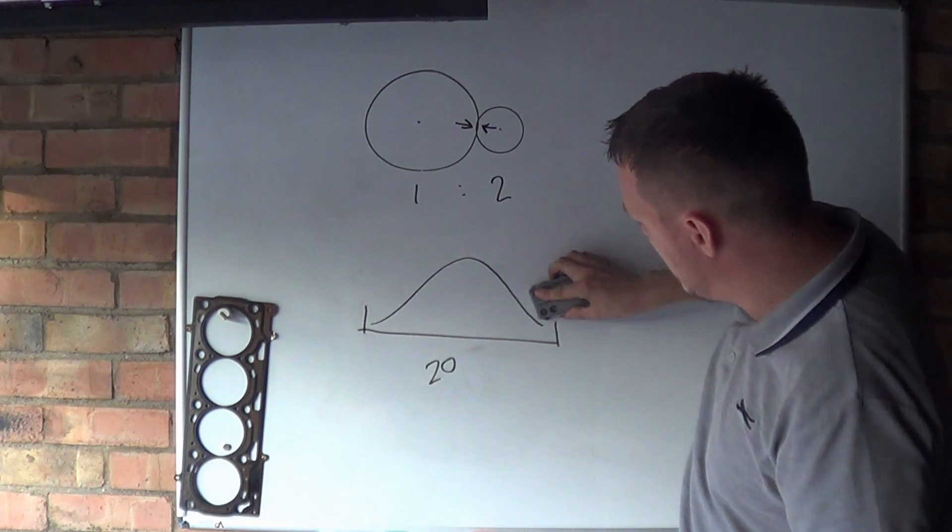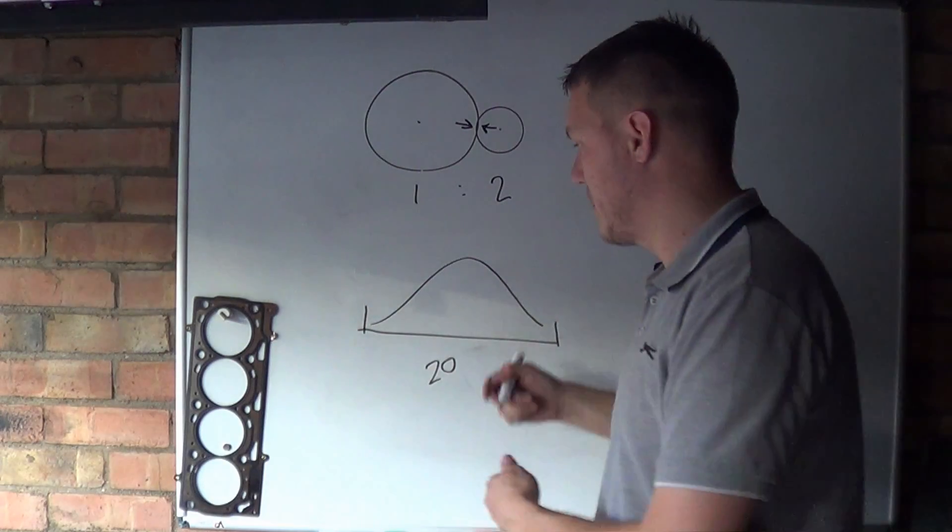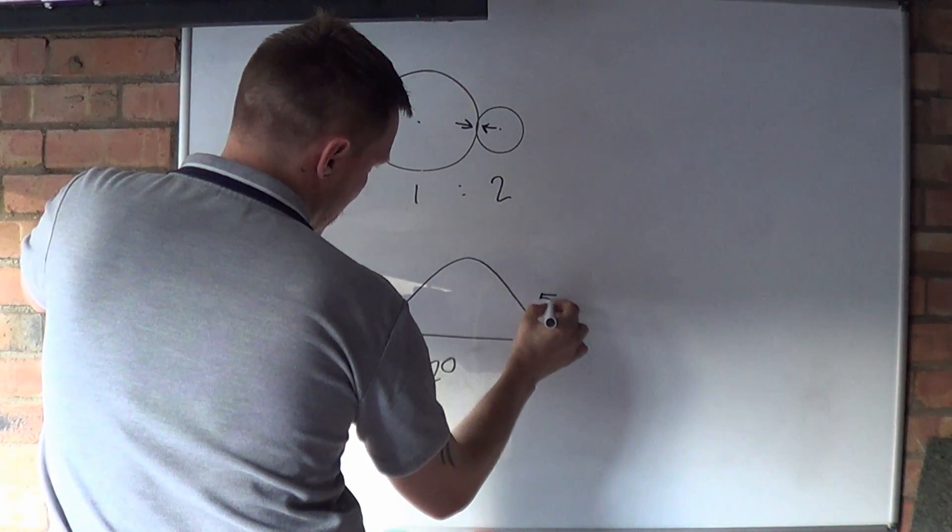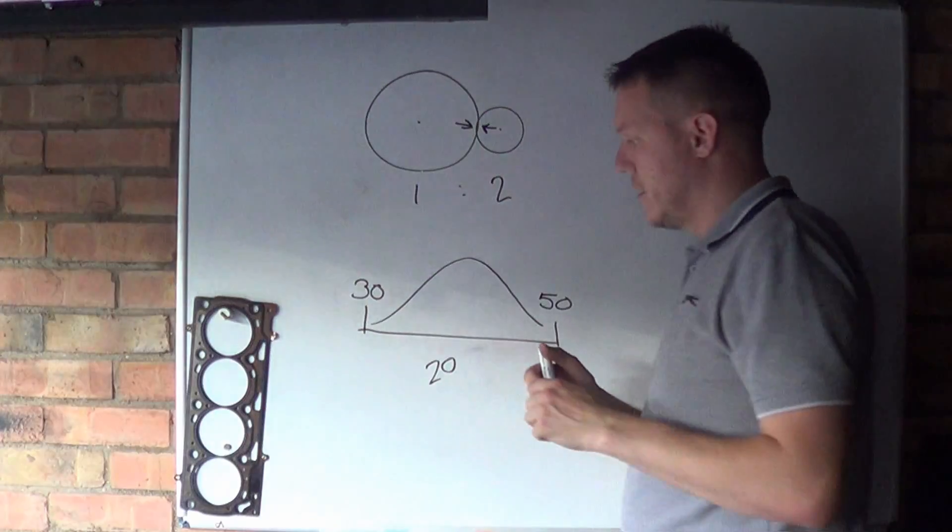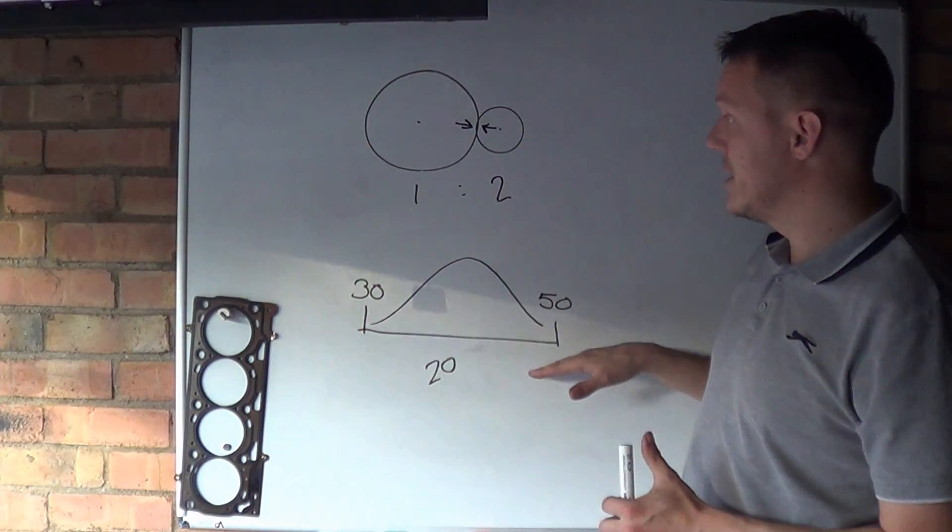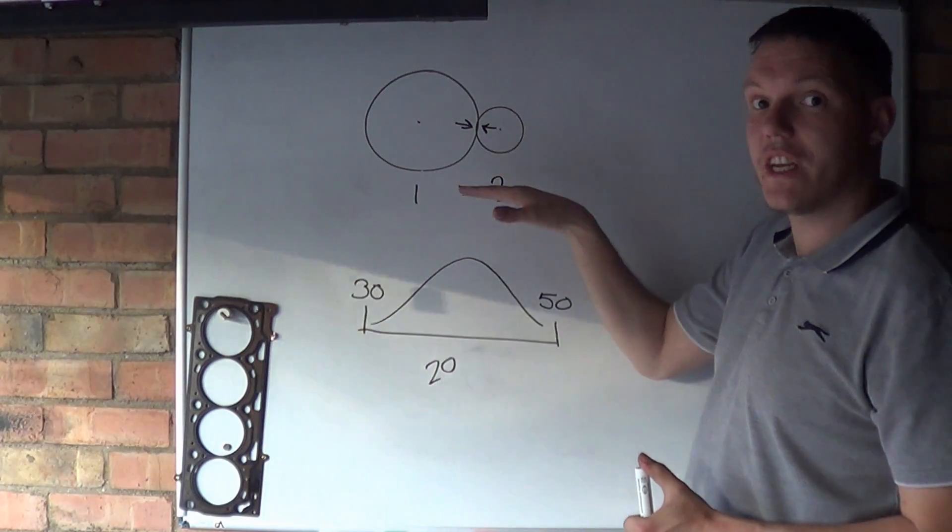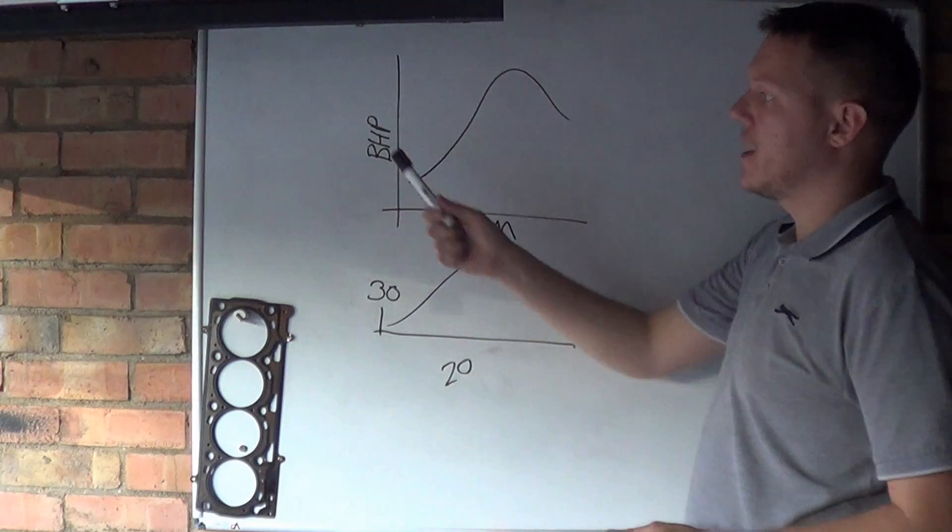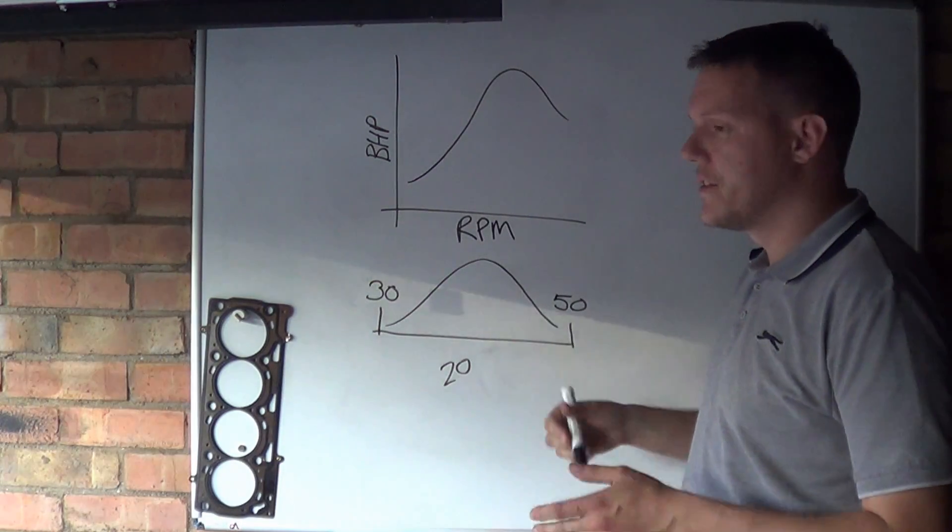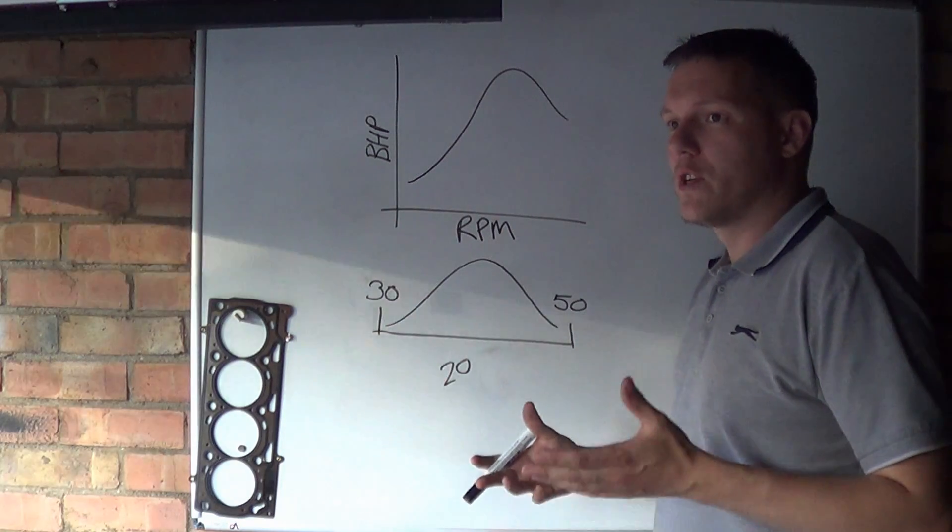Now we've got this gear ratio, we're already going 30 miles an hour, so we'll do 50. We've still got an increase of 20, but we're going from 30 now to 50 because we've changed gear ratio. So we're back with our brake horsepower and RPM graph with our power band.